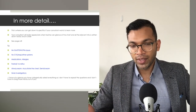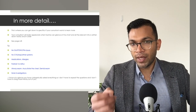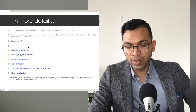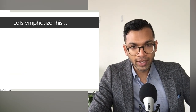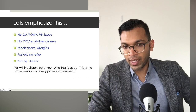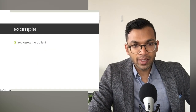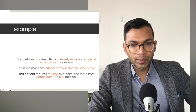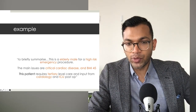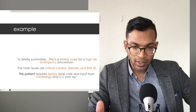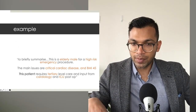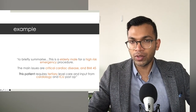Use this with judgment - some consultants want everything spoken aloud - but the technique is to mention things where you're synthesising and adding value beyond what's already written down. This is a technique I give trainees going through their final viva exam. To emphasise: once we've gone through all the normal things, you can eloquently say, 'To briefly summarise: there's an elderly male for a high-risk emergency procedure; the main issues are critical cardiac disease and a BMI of 45, and the patient requires tertiary-level care and cardiology input post-op.'